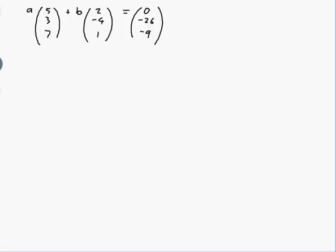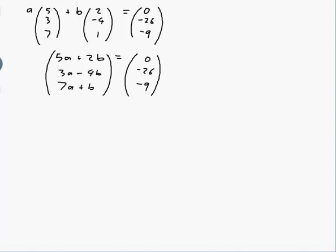Let me just have a look at what that equation is. On this left hand side I've got in the top coordinate 5a + 2b, and then 3a - 4b, and then 7a + b, and that vector is supposed to be equal to this vector. Well, in order to be equal, all three of the sets of coordinates should be equal, so actually I've got three equations.